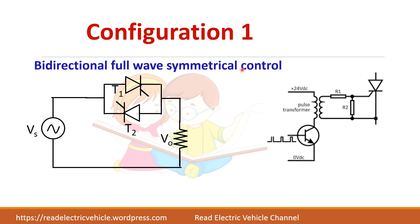The problem with configuration 1 is that the gate pulse sources for both thyristors must be isolated. The gate pulse is given between gate and cathode — the gate is made positive with respect to the cathode. If the triggering sources are not isolated, the cathodes of the two thyristors may be shorted together, causing a short circuit and loss of output control. This is the limitation of this method.